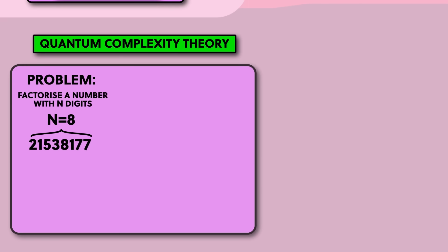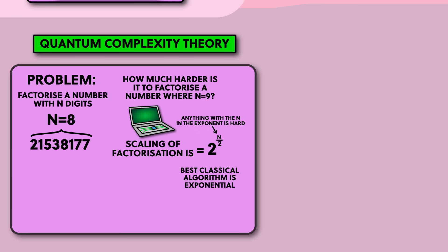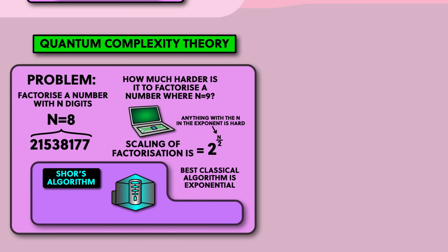Complexity theory looks at how difficult it is to solve a problem as the problem gets larger. So if you factorise a number with 8 digits, then you add another digit on, how much harder is it to factor the new number compared to the old one? Is it twice as hard, or exponentially harder? This is called its complexity or scaling, and for factorisation it's exponential. These exponential problems are the ones that really screw you over as the problems get bigger. One example of this was Shor's algorithm, which took advantage of the special features of quantum computers to create an algorithm that could solve integer factorisation with a scaling much better than the best classical algorithm. The best classical algorithm is exponential, whereas Shor's algorithm is polynomial — which is a huge deal in complexity theory. It turns an intractable problem into a problem that can be solved, if you have a working quantum computer.